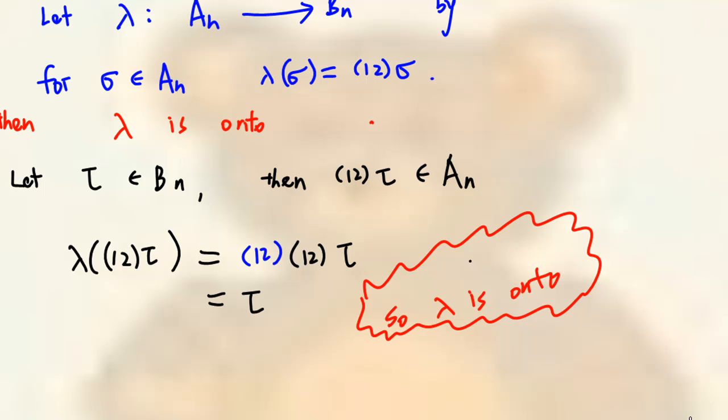Therefore, we have shown that lambda is 1 to 1 and onto from the set of even permutation to the set of odd permutation.